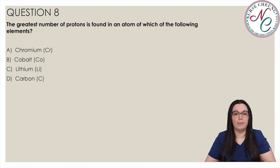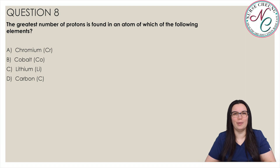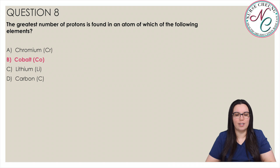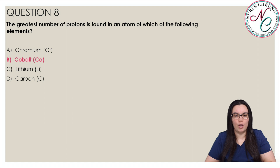The greatest number of protons is found in an atom of which of the following elements? Is it A Chromium, B Cobalt, C Lithium, or D Carbon? And the correct answer is B Cobalt. Cobalt has an atomic number of 27 so it contains 27 protons. Chromium has 24, Lithium has 3, and Carbon has 6.